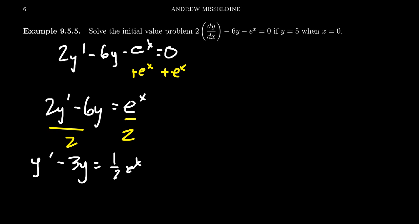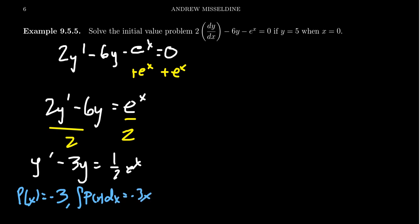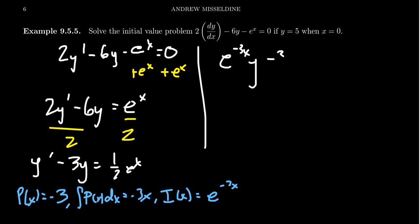This is the standard form. Now we compute the integrating factor. Here p(x) is negative 3 — don't forget that sign. An anti-derivative of p(x) is negative 3x, and we set the constant to 0. So the integrating factor i(x) is e to the negative 3x. Multiplying both sides by that factor gives e to the negative 3x times y prime minus 3e to the negative 3x times y, equals 1/2 e to the x times e to the negative 3x.